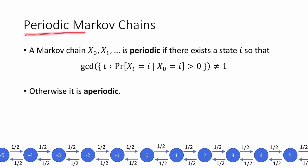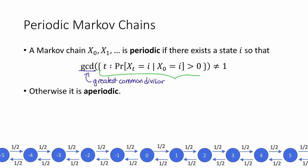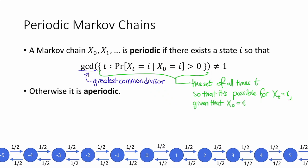Our next definition is that of a periodic Markov chain. We say that a Markov chain x0, x1, … is periodic if there exists a state i such that the GCD of the set of all t's where the probability that x sub t equals i, conditioned on x sub 0 equals i, is strictly greater than 0 — such that the GCD of this set is not equal to 1. GCD means greatest common divisor. This set is just all times t such that it's possible for x sub t to equal i given we started in i, and we require the GCD of this set to not equal 1.